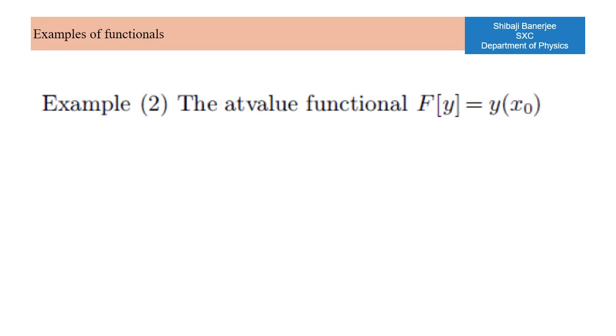The at-value functional accepts a function name and then returns its value at a specific point x0. The input function name may change but x0 does not. As an example when x0 is π/2 and you send in the identity function which is just x you get back the number π/2. On the other hand, sending in the sine function results in the value 1. What is the value of the at-value functional if the input function is 2x minus π?